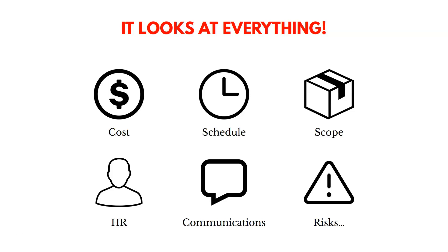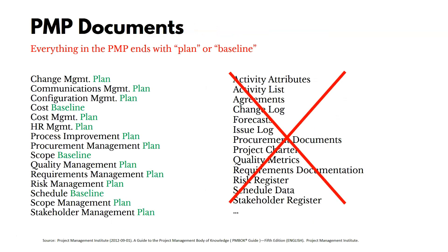The project management plan is a comprehensive plan that includes a bunch of subsidiary plans underneath it. Here's a way to remember it: anything that ends with 'plan' or 'baseline' is in the project management plan. So the cost baseline, the scope baseline, the quality management plan, the schedule management plan — all of those become part of the project management plan. If something doesn't end in 'plan' or 'baseline,' it's not part of the project management plan.